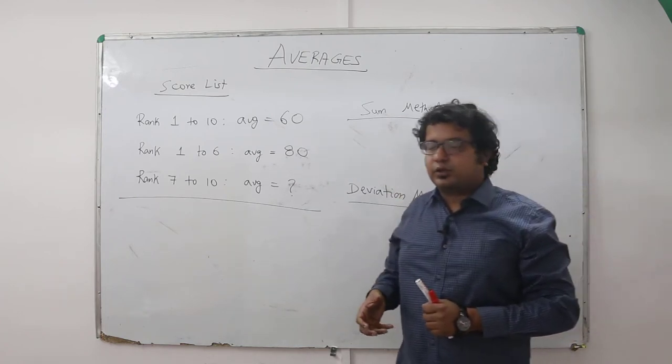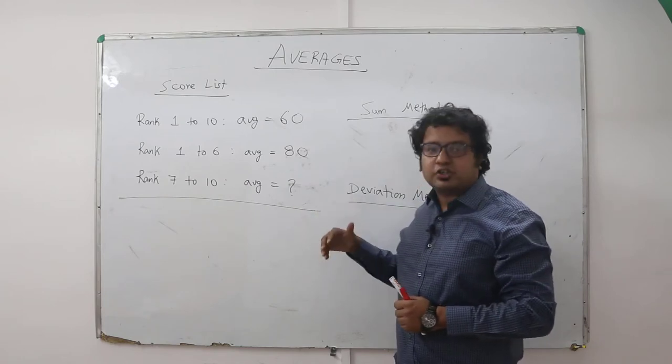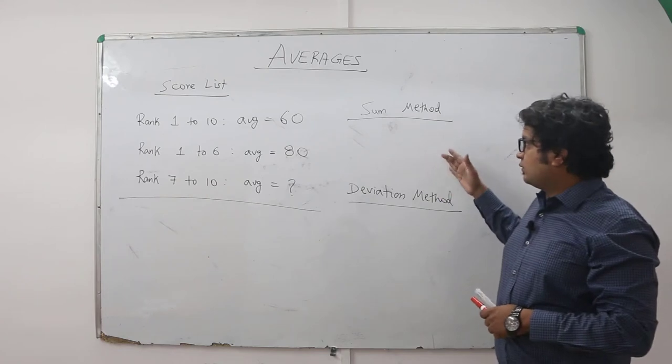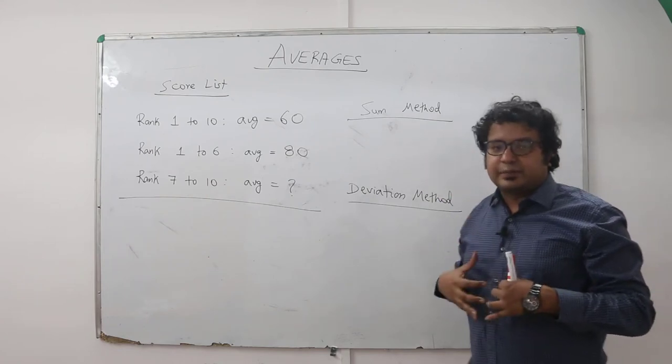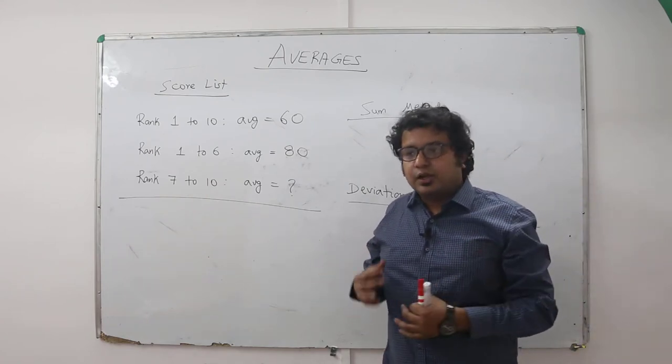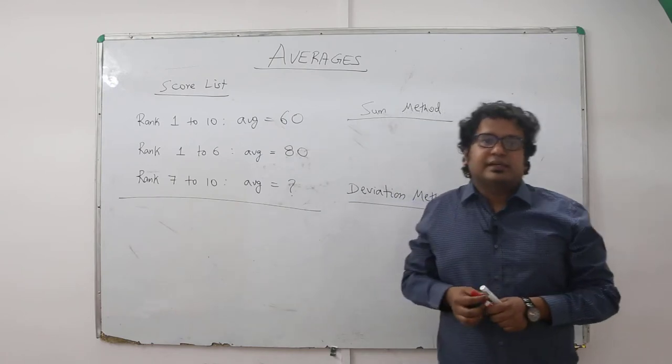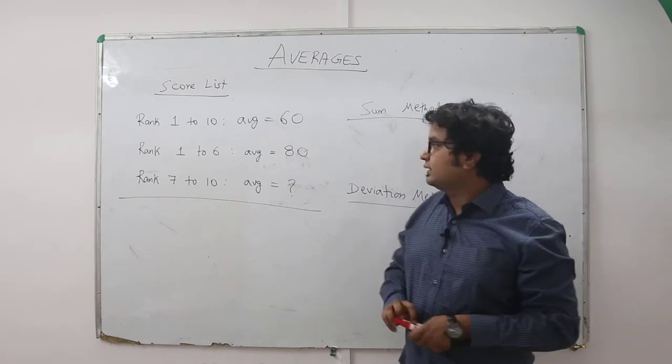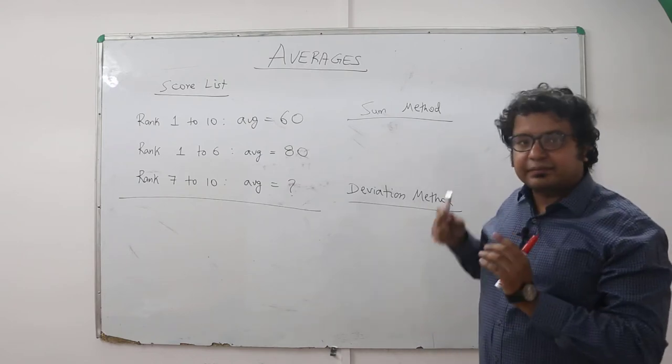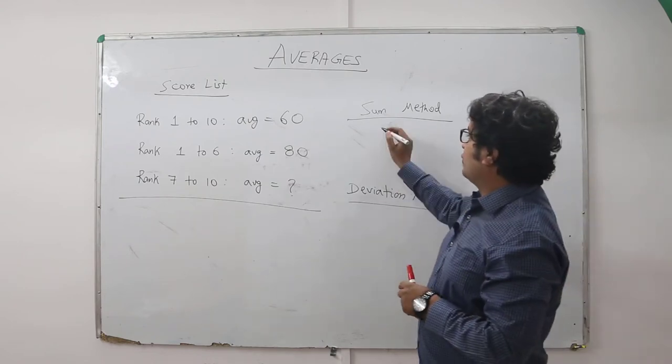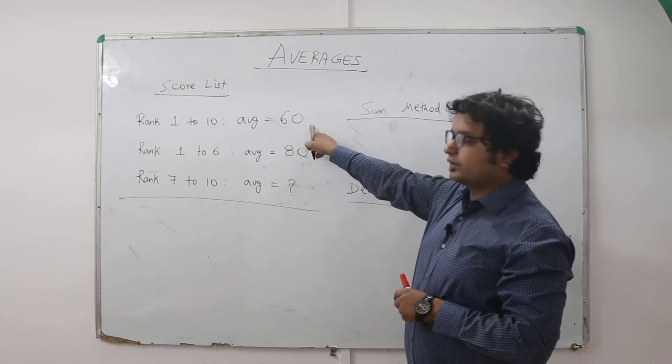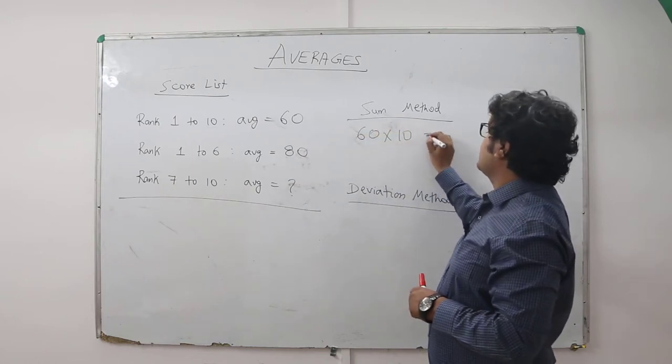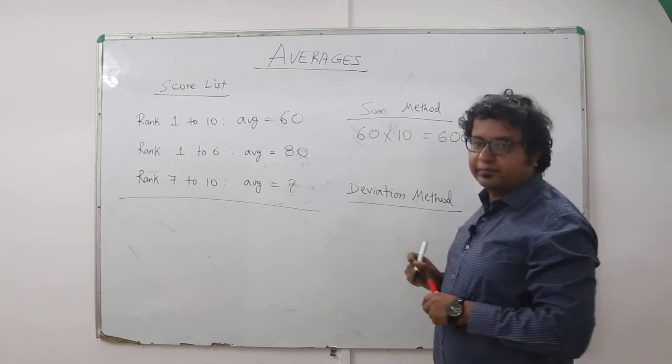Now the question asks you, what will be the average of rank 7 to 10? Now, I want to illustrate the difference between the sum method and the deviation method, which will help you save 20, 30, 40 seconds in every question. Sum method, something that we had learned in school. What is the total? Average into number of values. So the total score is 600.